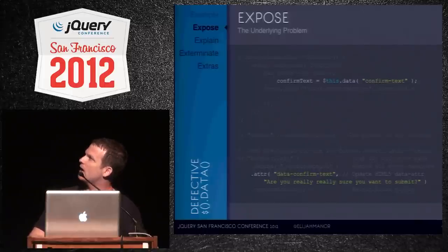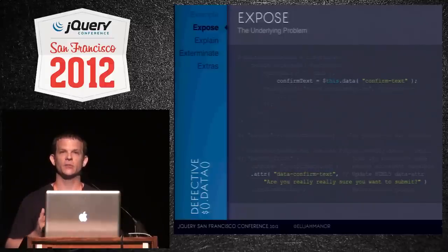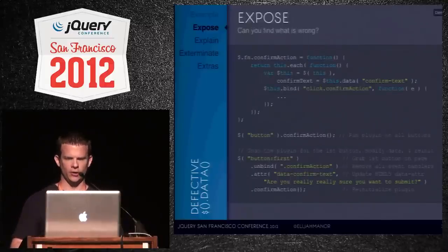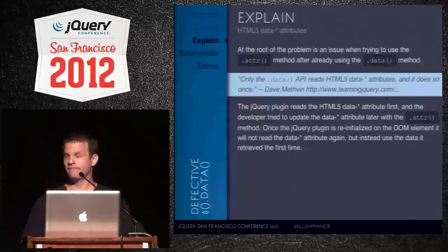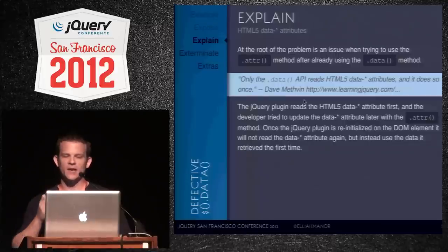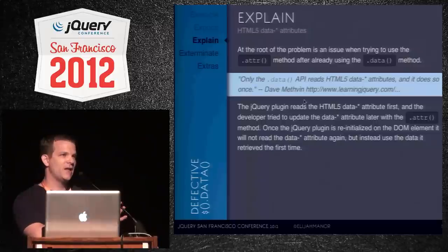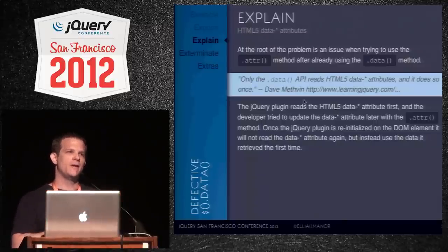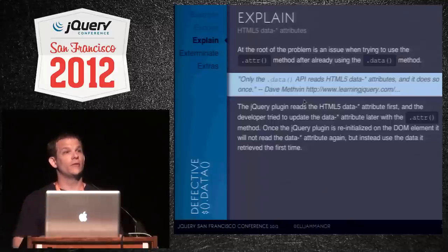The real problem is we're using the ATTR method to change the HTML5 data attribute. Dave Methen had a great blog post on learningjquery.com explaining this. Essentially, the .data() API reads HTML5 data attributes only one time. If you call .data(), it sucks in all those attributes — but if you change the attributes using ATTR and call .data() again, it won't re-read them. It uses its cached internal values.